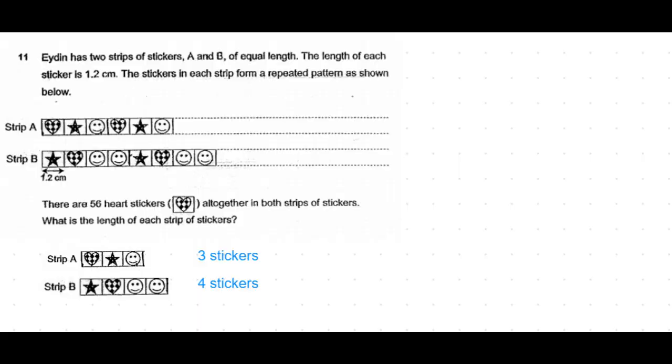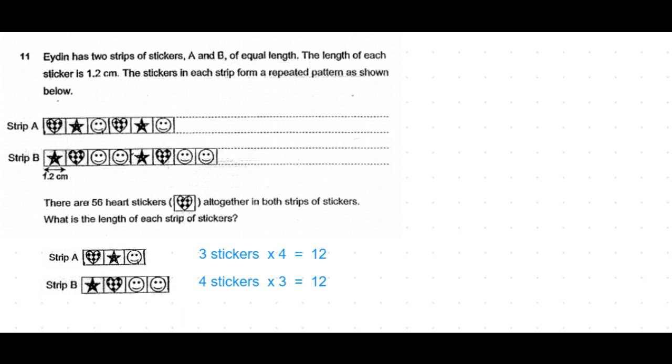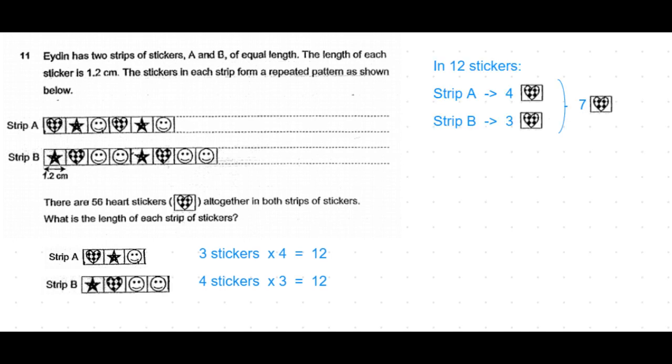The common multiple of three and four is 12. So in every 12 stickers, Strip A will have four heart stickers and Strip B will have three heart stickers. That makes a total of seven heart stickers for every 12 sticker length.